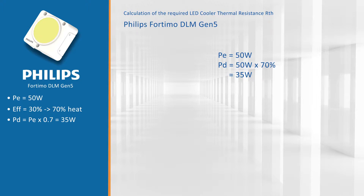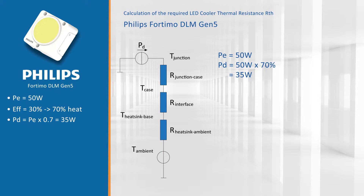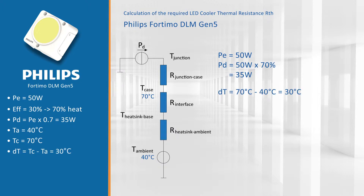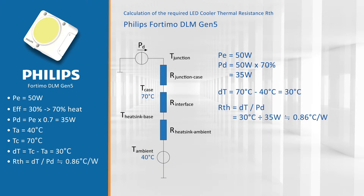I estimate for this downlight design — because it's in the ceiling — that the ambient temperature is around 40 degrees Celsius, and I want to keep my TC, my measurement point, below 70 degrees. So I have a gap of 30 degrees Celsius available for my cooling. If I divide my 30 degrees by the dissipated power of 35 watts, then I know my thermal resistance: 0.86 degrees Celsius per watt.